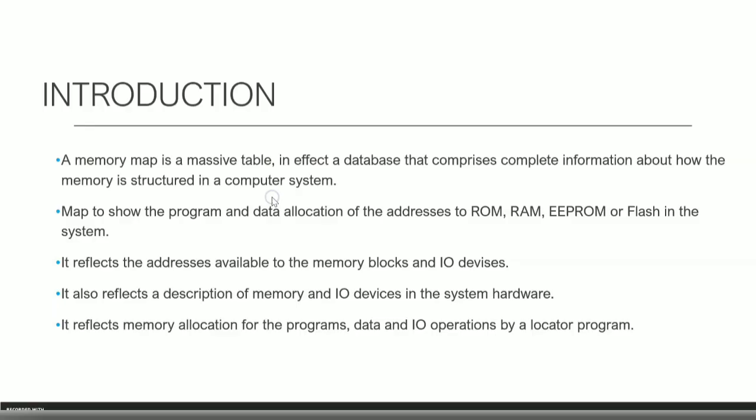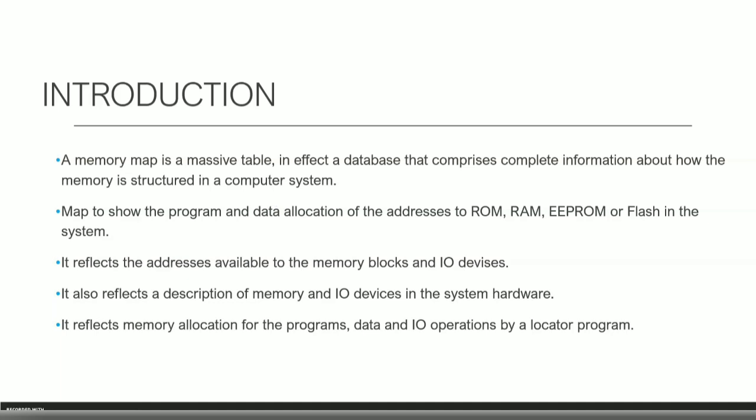Let us see what memory mapping actually is. Memory mapping, or a memory map, can be thought of as a massive table — it is a database consisting of information about which address holds what data in a system. In a system there will be various types of memories: RAM, ROM, Flash. The memory map tells us what data is stored at each address location.